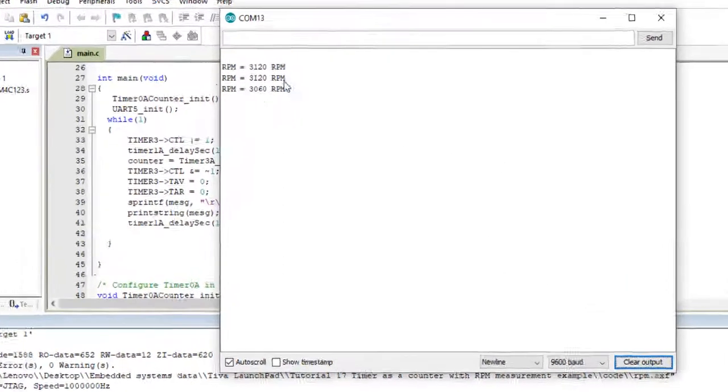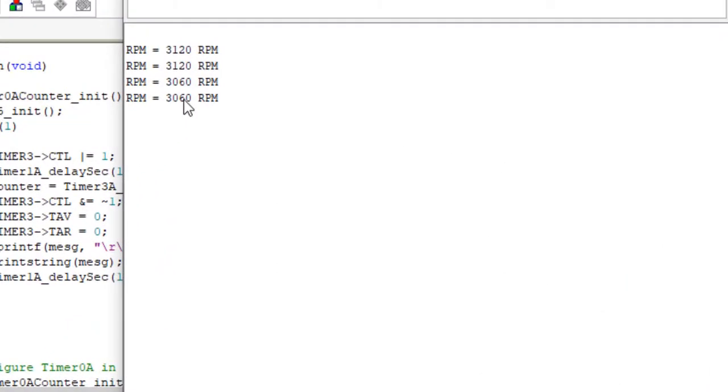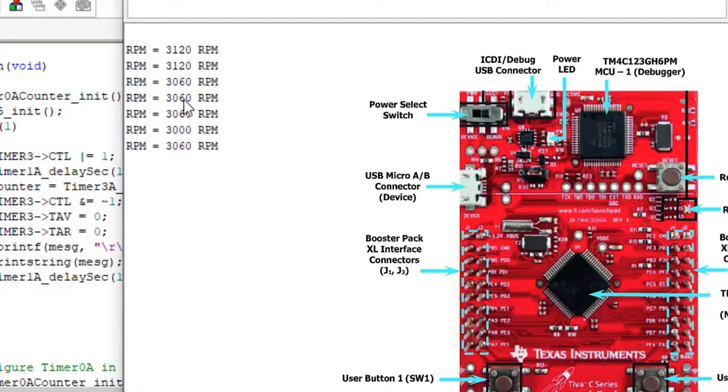In this tutorial, I will show how to design an RPM or tachometer using TM4C123 microcontroller. RPM meter is also known as a tachometer and it is used to measure the speed of rotating electromechanical systems such as AC or DC motors.